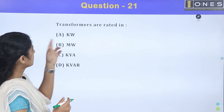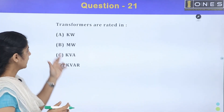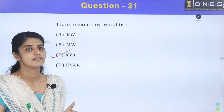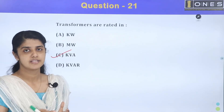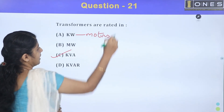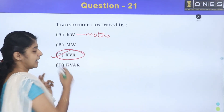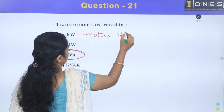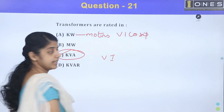For the 21st question: transformers are rated in KVA. The other machines — DC motors and generators — we call it KW. KW means the motors and generators. The transformers are rated in KVA, not KW. KW means VI cosφ, and KVA means V into I.